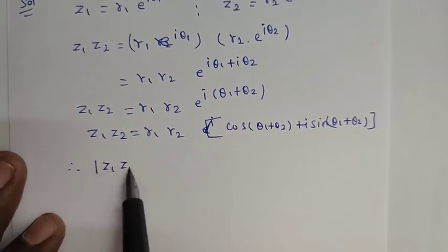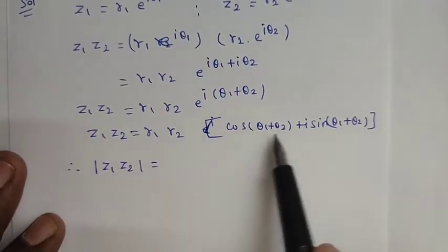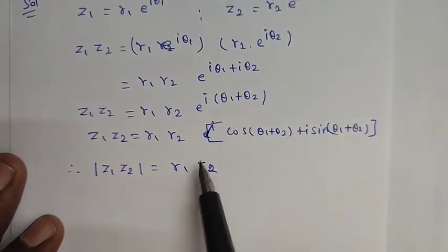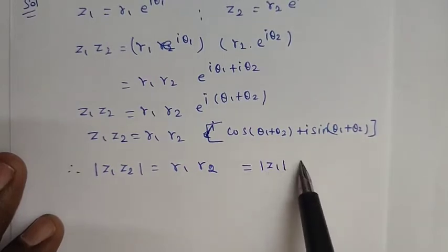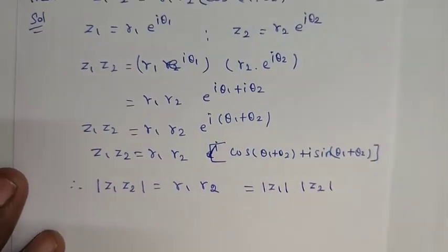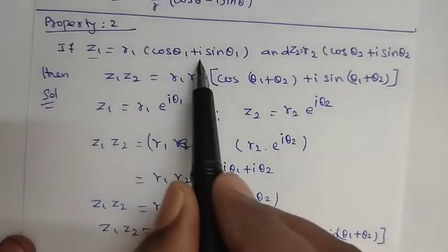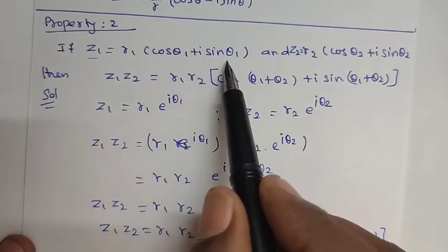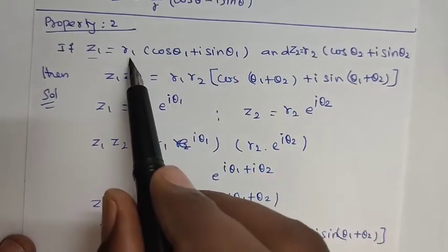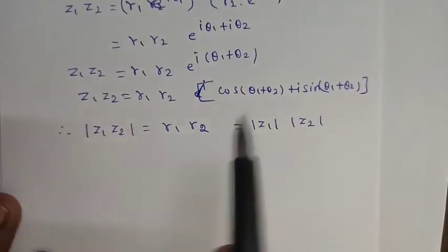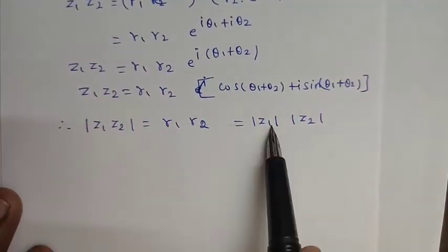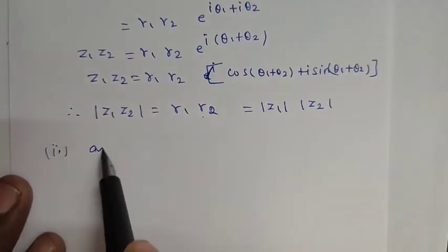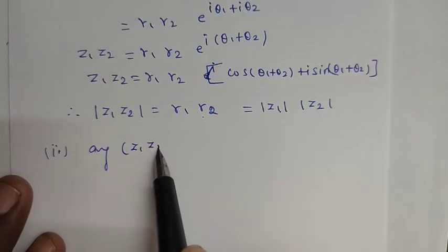From this, the modulus of z1 z2 equals r1 r2, which equals modulus of z1 multiplied by modulus of z2.